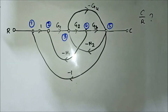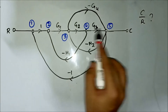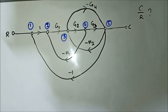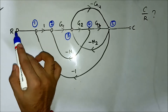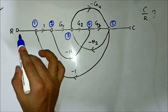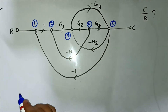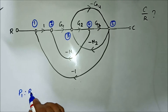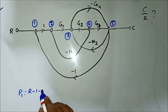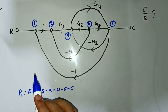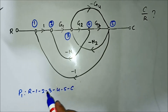First we have to find out the forward paths. One forward path is R→1→2→3→4→5→C, and its gain is G1·G2·G3.